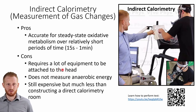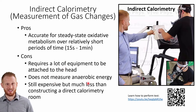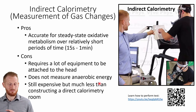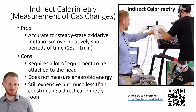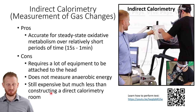The cons are that it requires fairly elaborate and expensive equipment — not as expensive as an entire direct calorimetry room, but still costly. It also does not measure anaerobic energy production; direct calorimetry can measure heat from both aerobic and anaerobic energy, but indirect calorimetry can only measure aerobic energy production. These machines typically cost $20,000 to $30,000 or more.